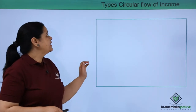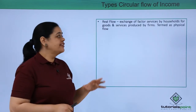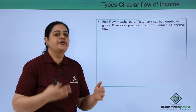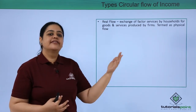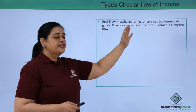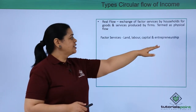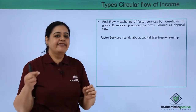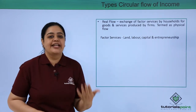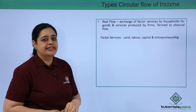Let us understand the types of circular flow of income. The first type is real flow — it is nothing but exchange of factor services by households when people go and provide services to the producers. This is also termed as physical flow. Factor services could be entrepreneurship, capital, labor, or land. Diagrammatically, the goods and services flow from the firms to households, the household would spend on that, and then the income goes back to the firms.